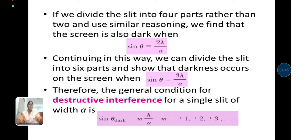Therefore, the general condition for destructive interference for a single slit of width a is a sin theta equals m lambda, where m is the order of the fringes starting from 1.